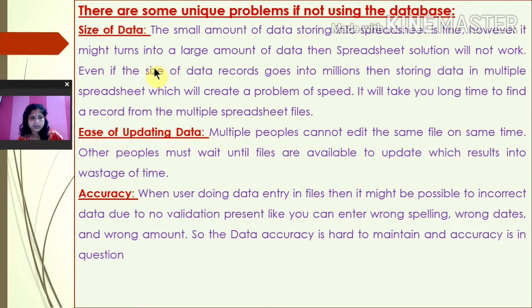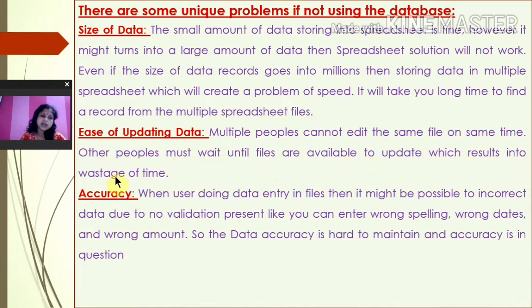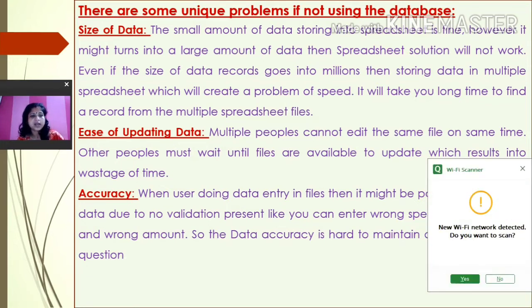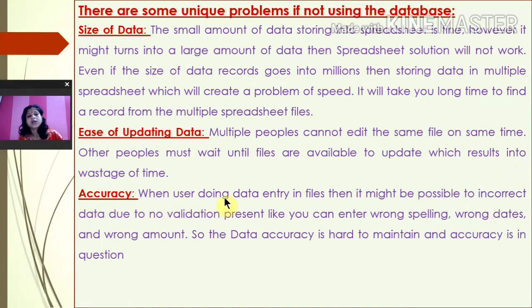Another problem is ease of updating data. Multiple people cannot edit the same file at the same time — others must wait until the file is available, which results in a waste of time. In a database, data is stored in a central location, so updates happen simultaneously for all users. If data is not kept in a central database, it will be difficult to update efficiently.